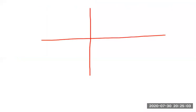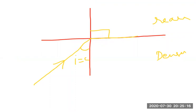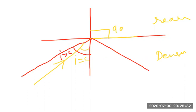Generally, if a ray is incident from a denser medium towards a rarer medium, and its angle is equal to the critical angle, it bends away from the normal and grazes along the surface. If the angle is slightly greater than the critical angle — that is, I greater than C — then the ray reflects back in the same medium.